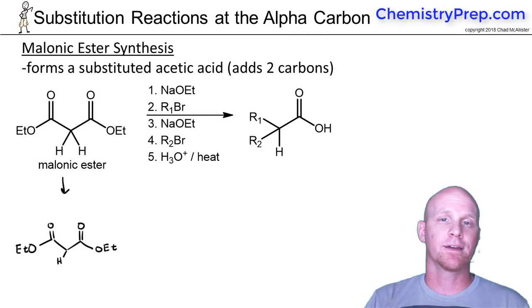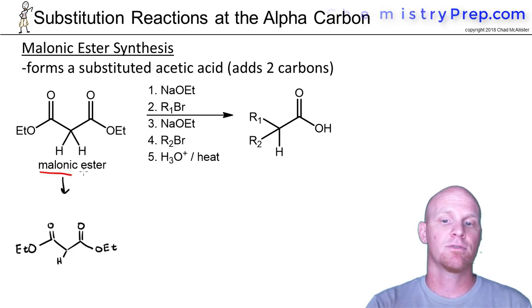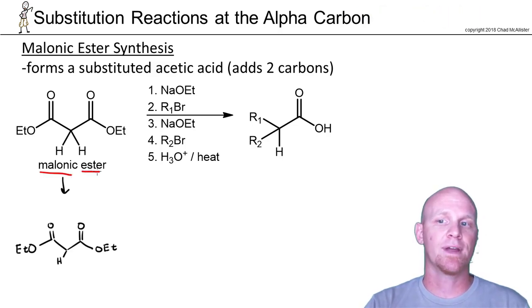Now we're going to take a look at what's called the malonic ester synthesis. It's called the malonic ester synthesis because it always starts off with malonic ester as your reactant, and it's an example of what we call a template synthesis. In this case, you always end up with the same product with just a little bit different variation. So we're always going to end up with some form of substituted acetic acid.